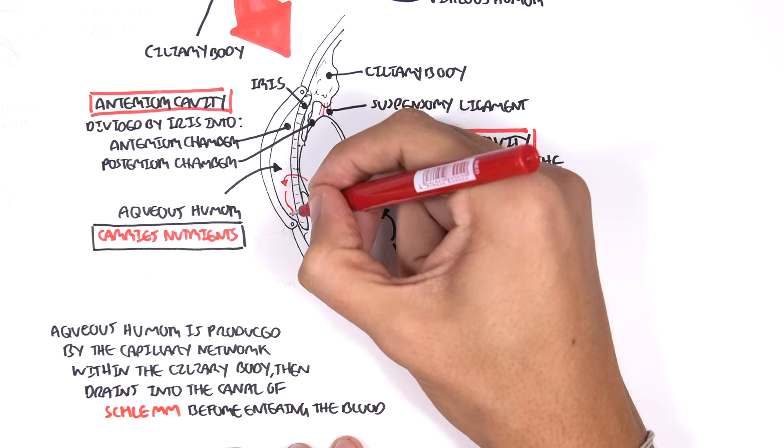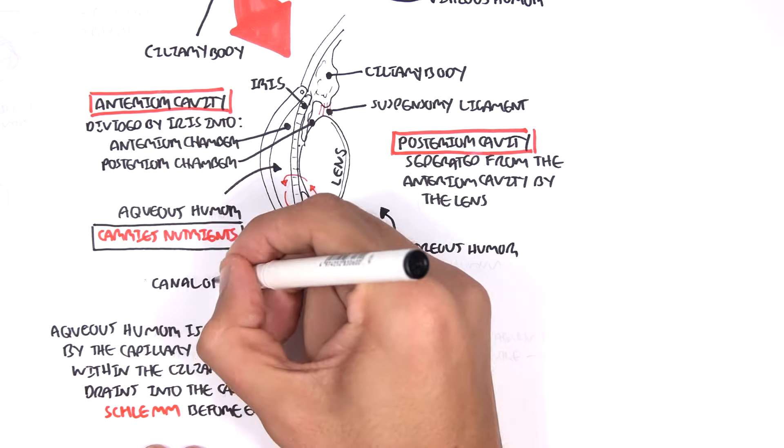Here we can see the aqueous humor produced from the ciliary bodies, and it drains into the canal of Schlem.